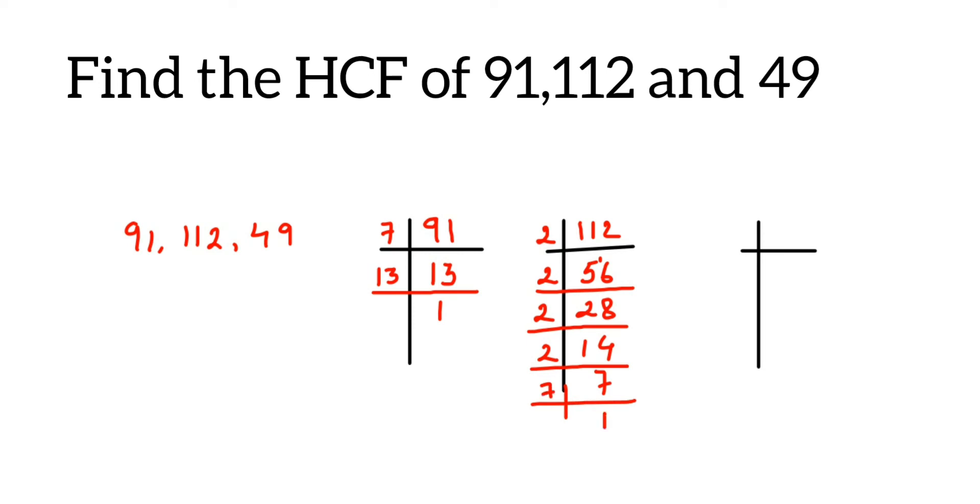For 49, we have 7 times 7 equals 49. Now once we've done this, we write down every number in terms of prime factors. So 91 equals 7 times 13.